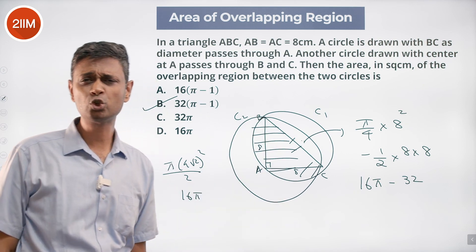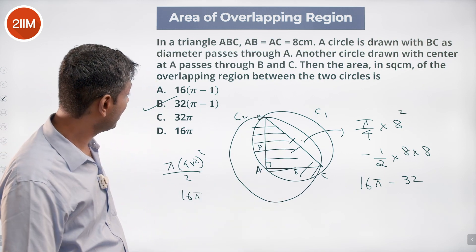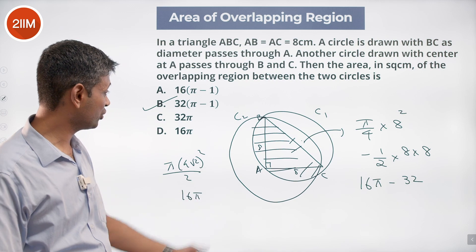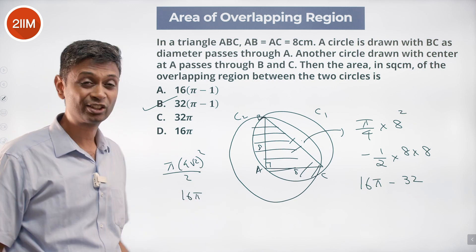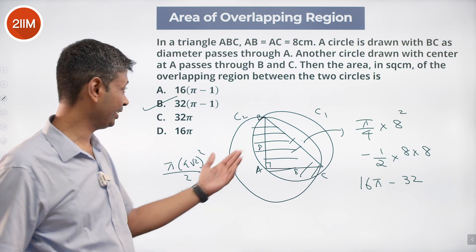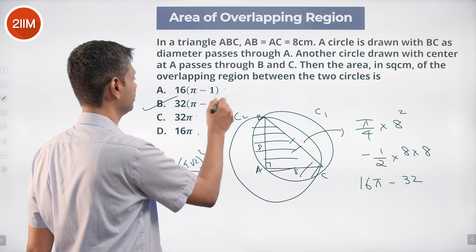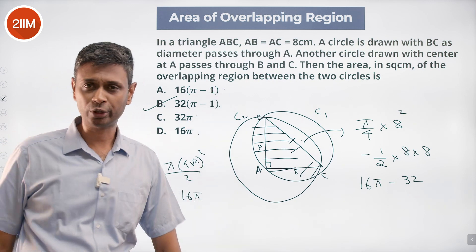Nice, a simple question. You couldn't have guessed this — the answer must include the triangle term. The answer is 32(π − 1), not any of the simpler-looking options.